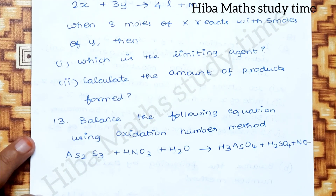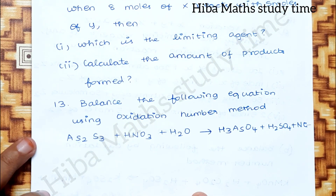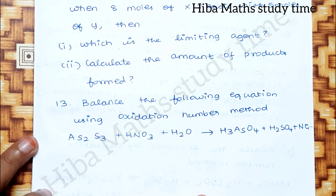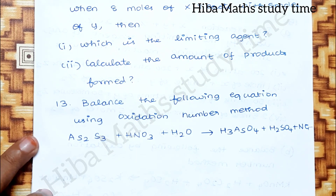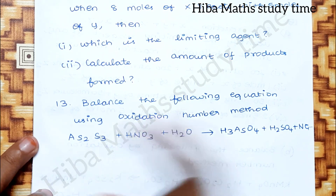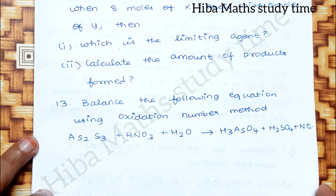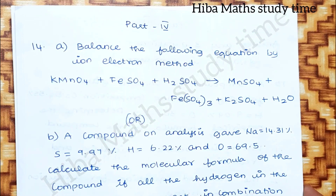The 13th question is the compulsory question: balance the following equation using the oxidation number method. So the oxidation number method is important — solve the question using that method. First, review the previous year question paper so you can apply the important questions. At the end of Part 4 is the 14th question.